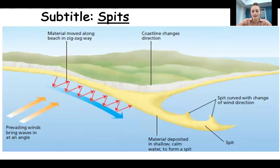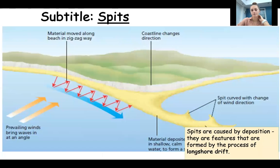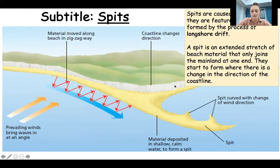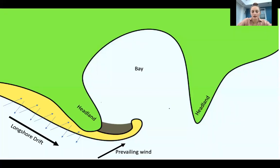The main landform we're looking at today is a spit, which also links to two other landforms we'll briefly cover. A spit is caused by deposition and is a feature formed by the process of longshore drift. A spit is an extended stretch of beach material that only joins the mainland at one end — you can see the mainland here but there's nothing at the other end. Spits start to form when there's a change in direction of the coastline, such as along a headland, and longshore drift carries on in a straight line rather than following that change.